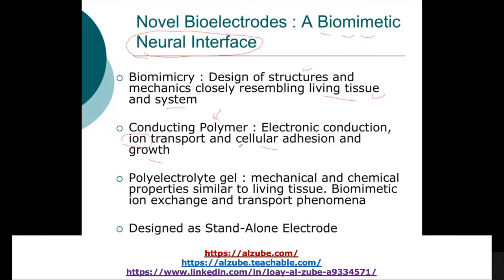If we really want to create an artificial neuron, we think a lot about this in research. We developed something called a polyelectrolyte gel. It has mechanical and chemical properties similar to living tissue — it's biomimetic. It allows for ion exchange, meaning ions can move in and out, enabling electrical activity and transport phenomena. It is also designed as a standalone electrode that does not need to be connected to a battery for amplification. All of these are what we call bioelectronics.